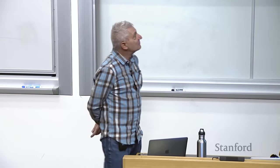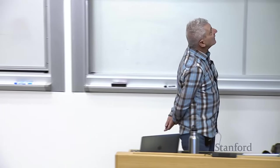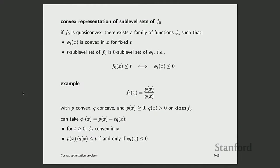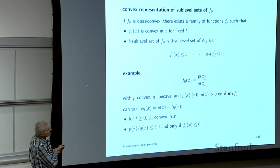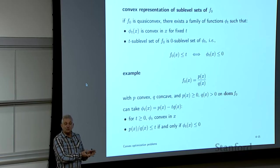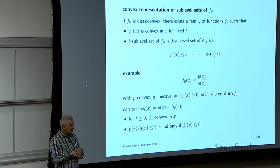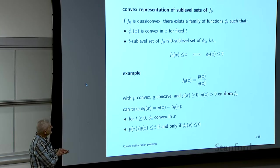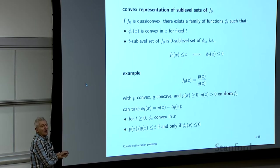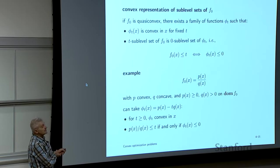It's not that hard to solve. If a function is quasi-convex, its sublevel sets are convex. We introduce a function phi-t whose zero sublevel set is the T sublevel set of your function, and this function has to be convex. There are completely generic constructions of phi-t. Often it's just suggested by the problem. Here's an interesting example: the ratio of a non-negative convex function over a positive concave function is quasi-convex.